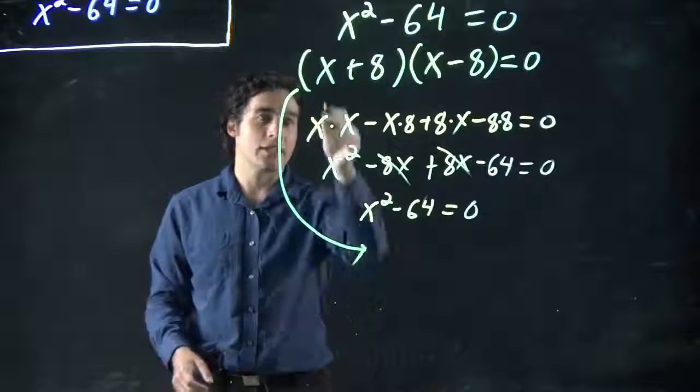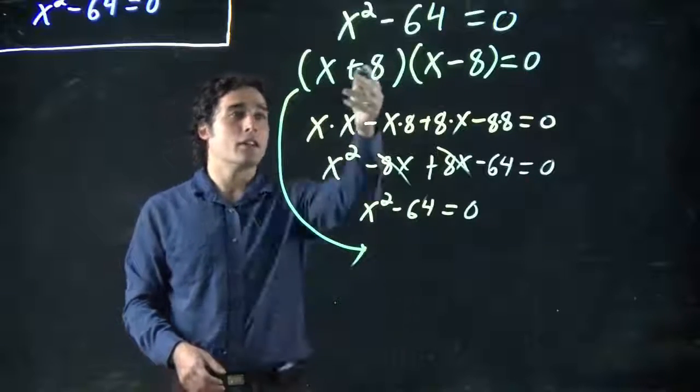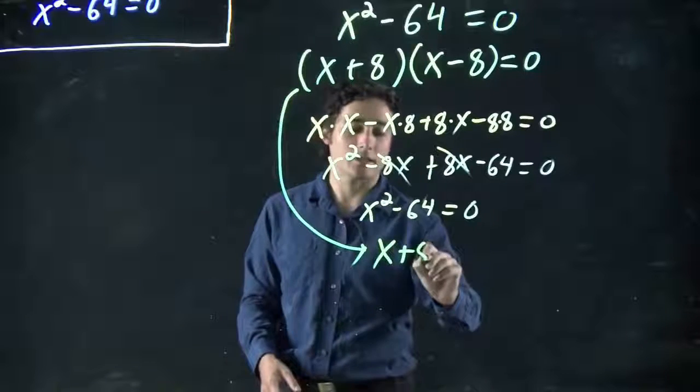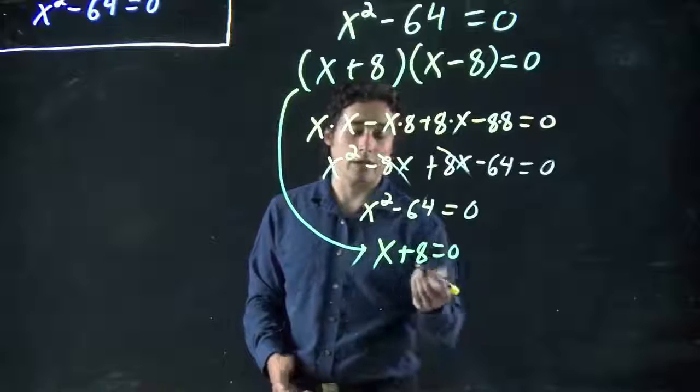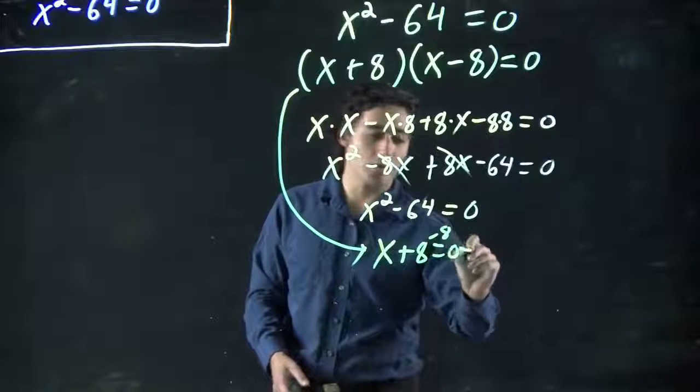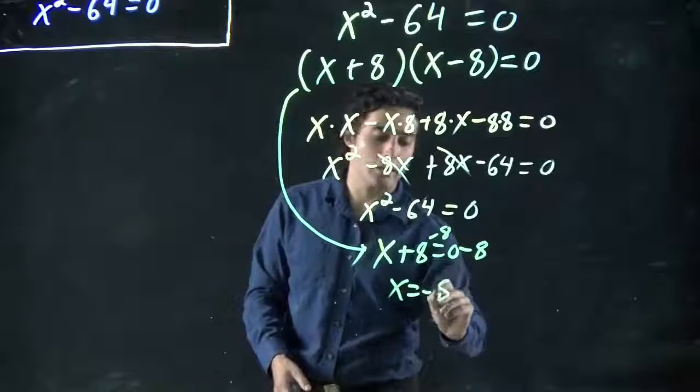If I wanted to solve x, take this line, go all the way down here, and as before, we set each bracket equal to zero. x plus 8 equals zero. Okay. Well, that means subtract minus 8 from both sides. x equals minus 8.